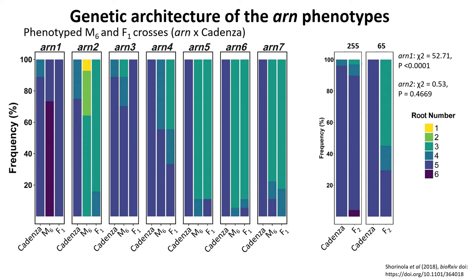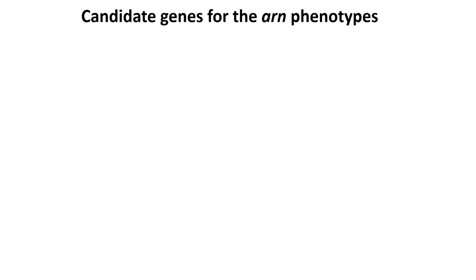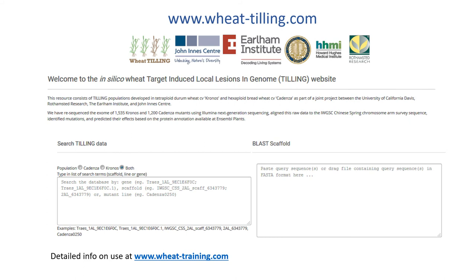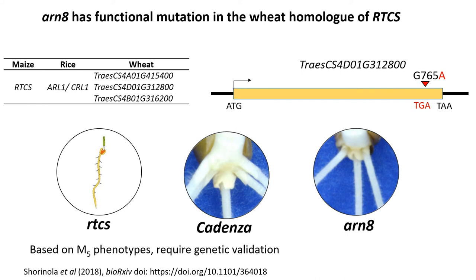We already know some genes that control root development in maize — including RTCS, ROM1, and BIG1, which have seminal root phenotypes. So we checked for mutations in these genes in some of our mutants. We have a wheat TILLING population — like Arabidopsis, you can go to this website, enter the gene model of a gene of interest, and identify mutants in that gene. For RTCS, we found a wheat homolog and identified a mutation causing a premature stop codon in that gene, which is present in un-8. This is just an M5 phenotype that needs further genetic confirmation, but it is a promising lead.